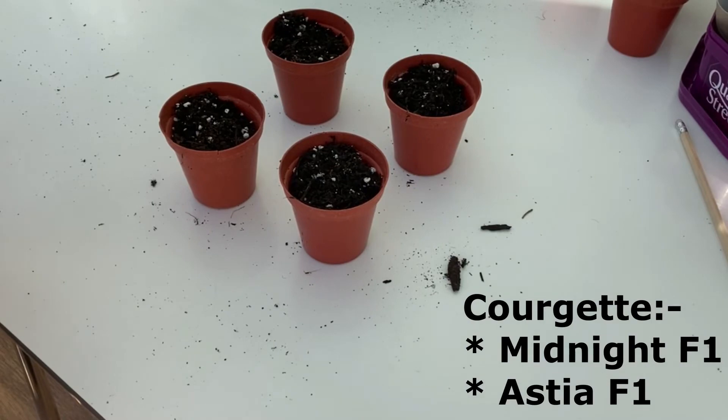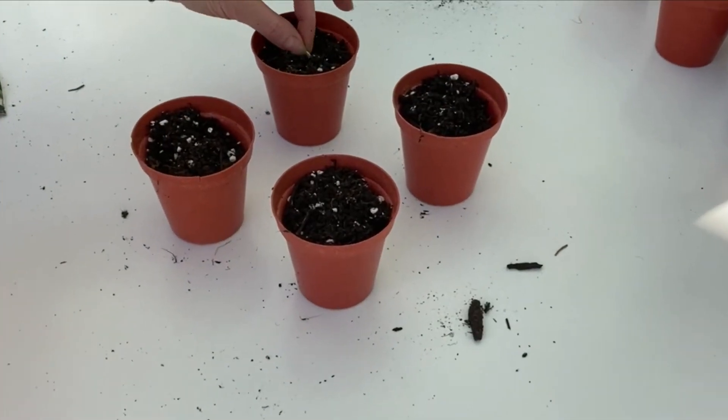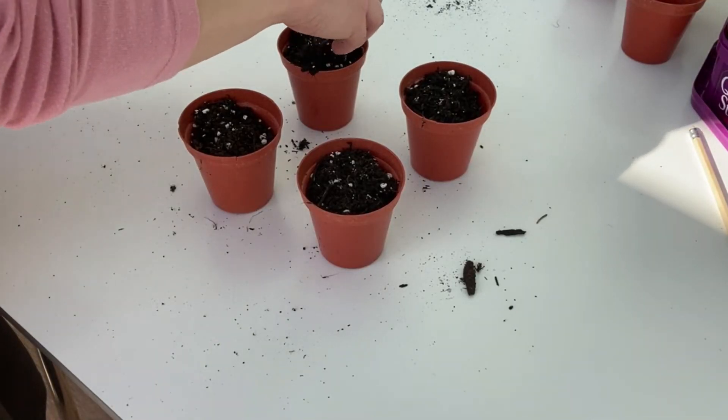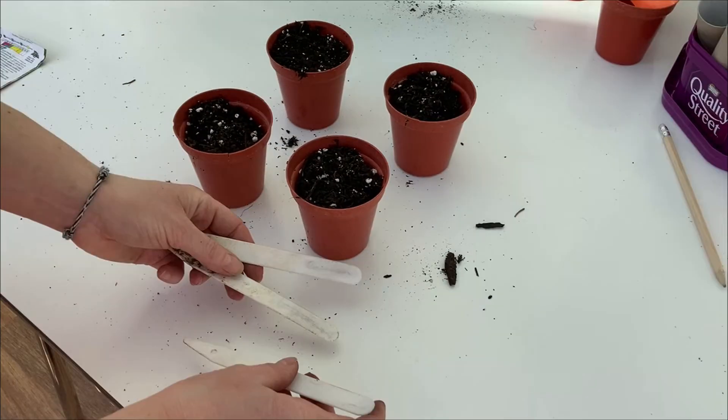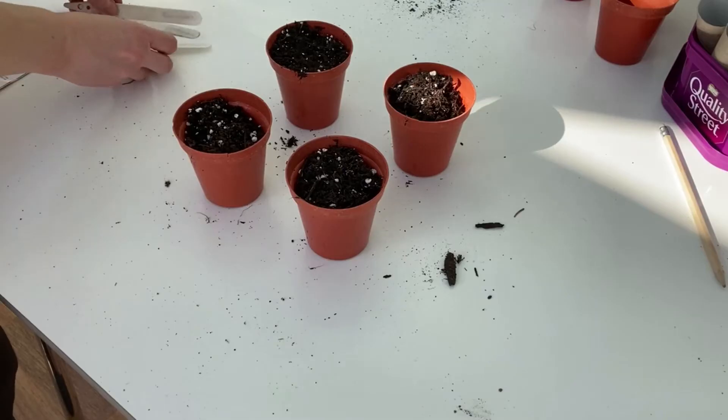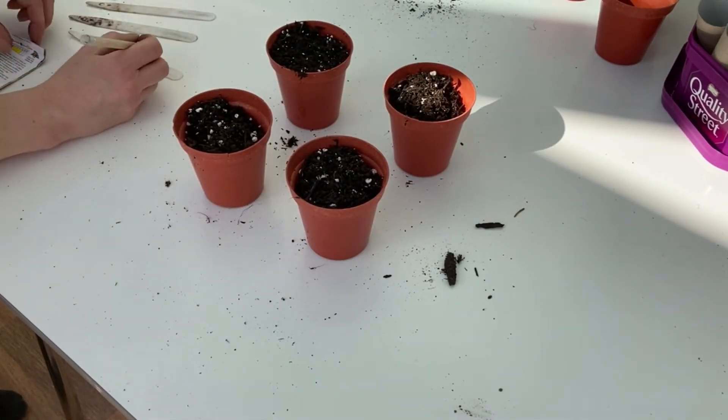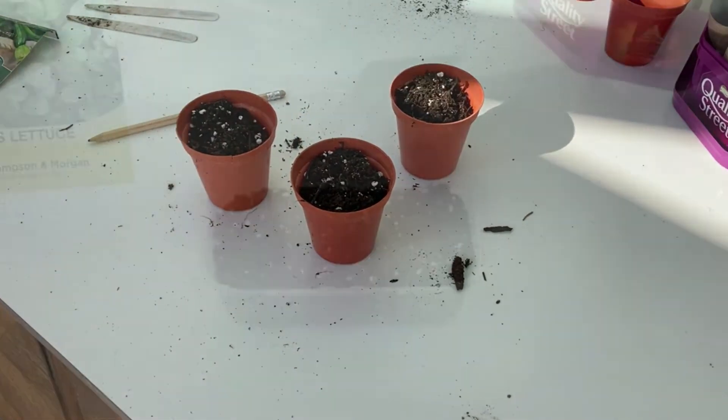I'll be growing two different types of courgette this year, but the seed is sown in exactly the same way. Pop it on its edge, one to two centimeters deep, cover it with some soil. I'm using these old plastic labels and each year I just write on them in pencil and then I can just rub it out and keep reusing them. Once you've labeled it, give it a water and pop it on a sunny windowsill.